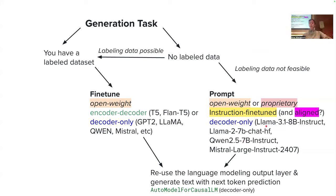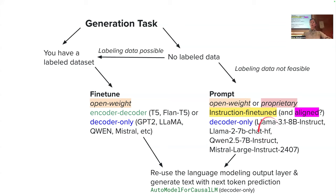Little has changed for generation tasks relative to classification — no encoder-only models, and alignment becomes more important here since you are actually generating text. For prompting, you have various options including zero-shot prompting where you just give an instruction and the instance, or in-context learning where you provide a few shots.